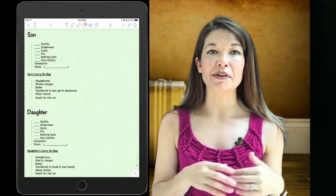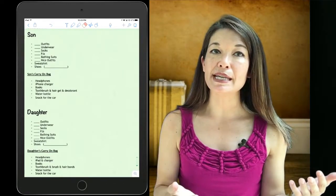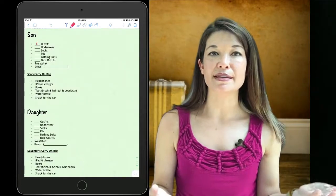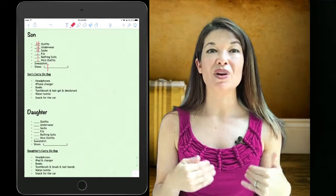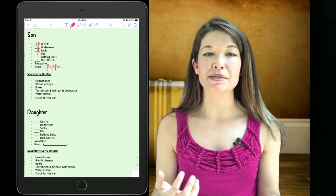I assume that they have a main bag and a smaller carry-on even if it's just a car trip. I leave blanks so that I can fill in things like the number of outfits they need, socks or bathing suits, and nice outfits. I have a blank next to shoes so that I can specify when they need to remember to pack flip-flops, nice shoes, etc.